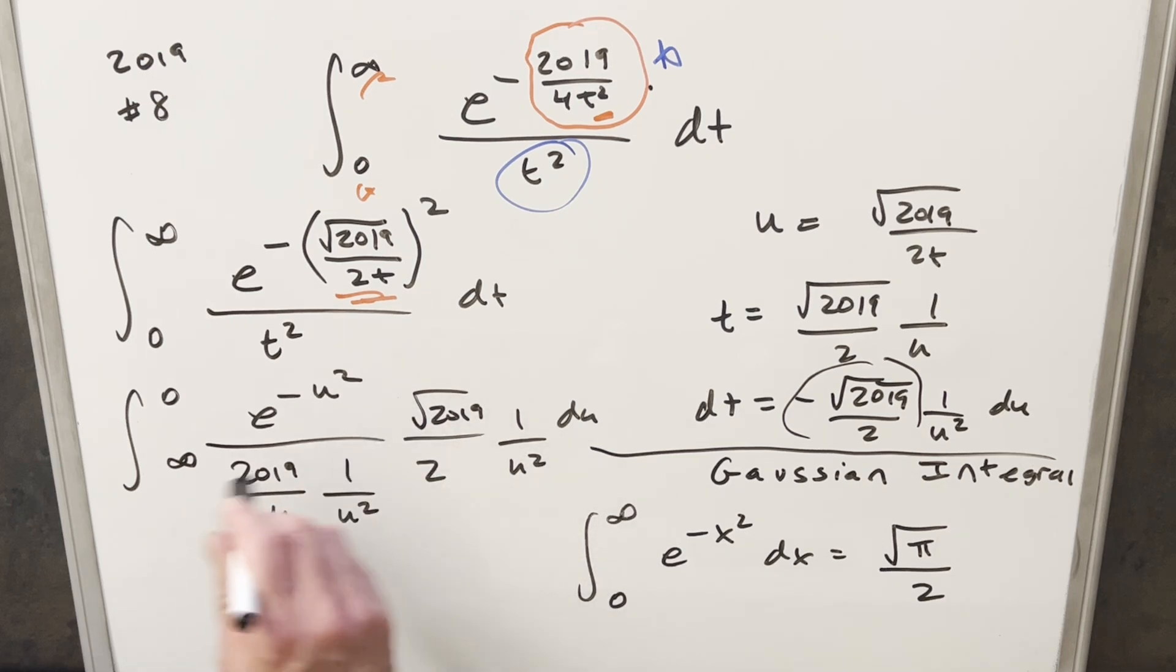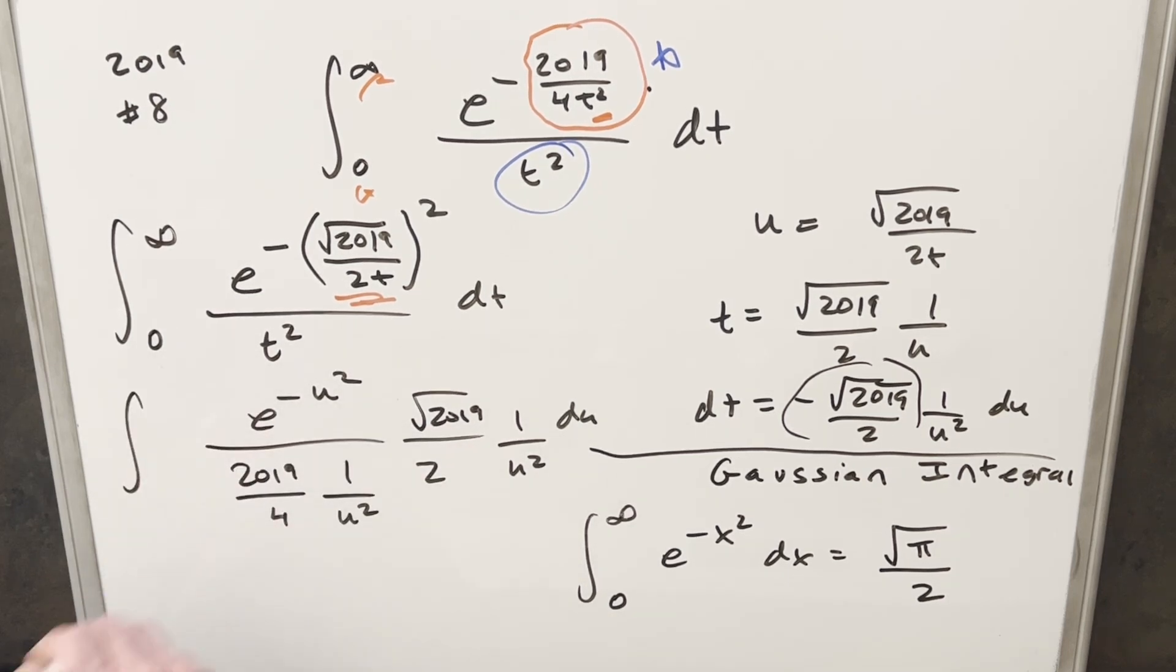But now from here, I take this minus sign. I can use to swap my bounds over here. So now I'm doing this. We'll be going from 0 to infinity. I can take the u squareds and cancel that here. 2 over 4. We can write that as a 2. But let's bring that up front.